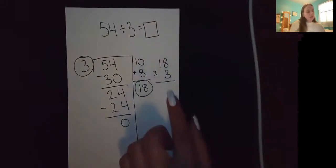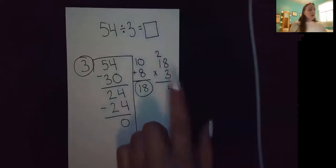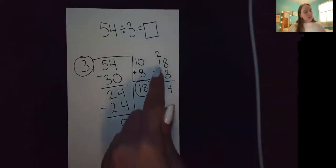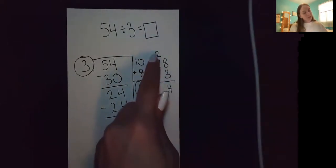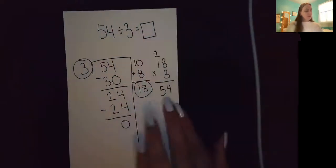Eight times three, I know is 24. I'll keep the four. Carry two tens. I know three times one ten is three tens plus two more tens is five tens, which gives me 54.